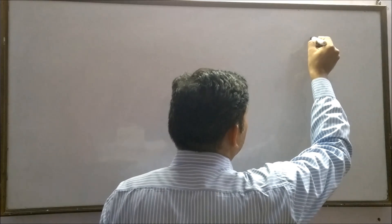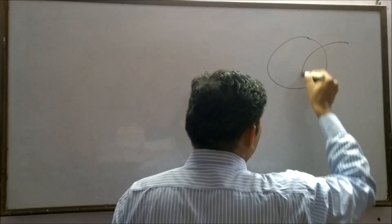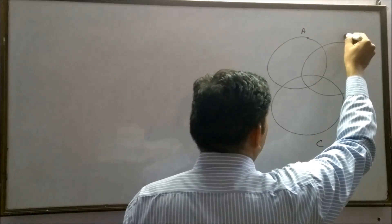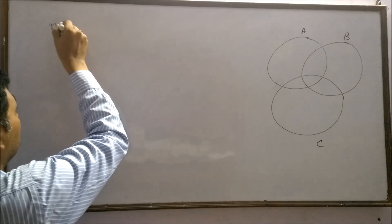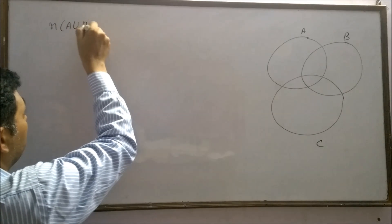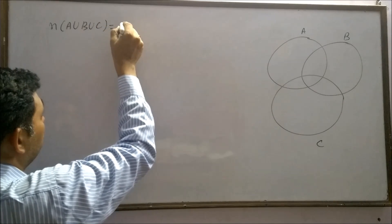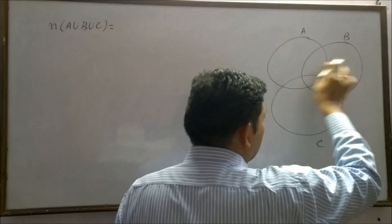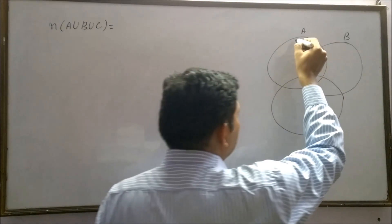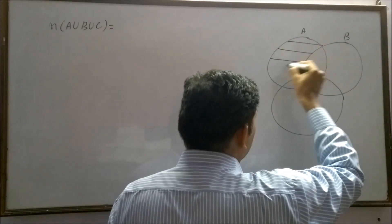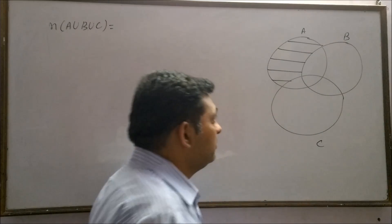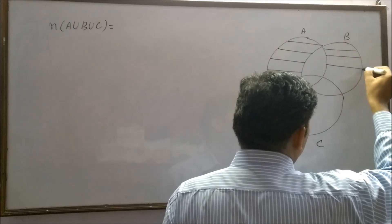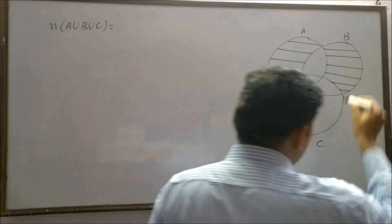Consider there are 3 sets: set A, set B, and set C. Here I am discussing A union B union C. This region contains exactly A. This shared region is exactly B.